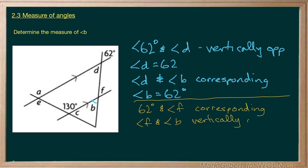And angle F and angle B are vertically opposite. It's just a matter of order in which you want to do it. The corresponding angles are equal. So angle F is 62. And this, of course, makes angle B equal to 62 degrees.